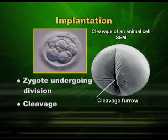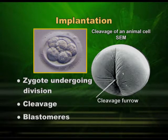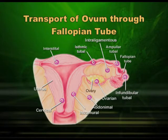Coming back to cleavage — the first division is vertical, the second division is horizontal, resulting in four cells, then division goes on: 8, 16, 32. Up to this stage it is a ball of cells, and then a cavity appears in the center called the blastocele, and hence the structure is called the blastocele. Meanwhile, the fertilized zygote is moving down from the fallopian tube to the uterus, dividing from 1 to 2, 2 to 4 — dividing within itself, not separating. By the time it reaches the uterus it is at the 16 or 32 cell stage, and the point where it first touches is the implantation point in the uterine endometrium.